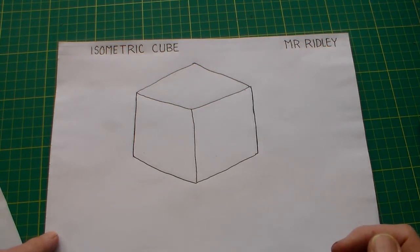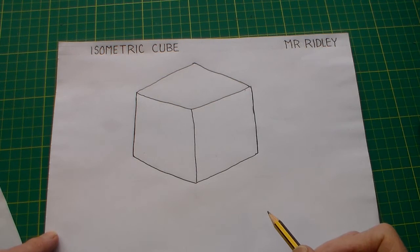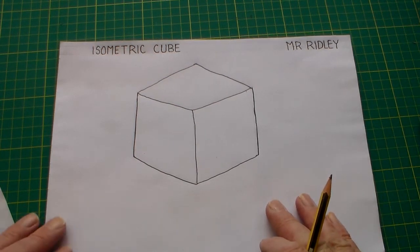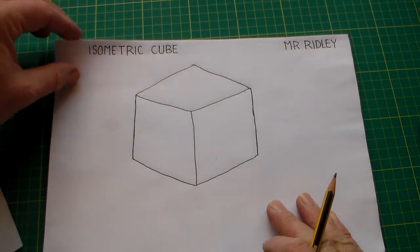You might have drawn isometric cubes using isometric paper, but actually it's quite simple to draw that cube not using the isometric grid.